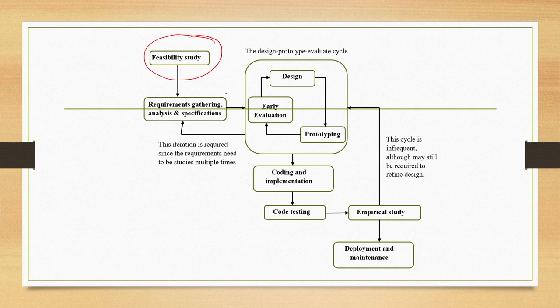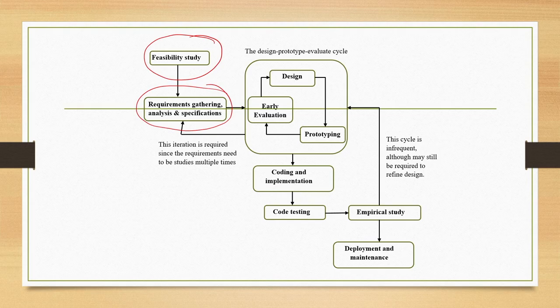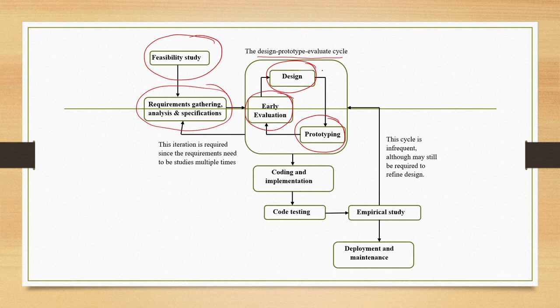The first stage we discussed in detail is the requirement gathering, analysis and specification stage. In this stage, we gather end user requirements, which actually refers to both client requirements as well as the actual user requirements. This is followed by a group of sub-stages together called the design-prototype-evaluate cycle, consisting of a design stage, a prototyping stage, and an evaluation stage.